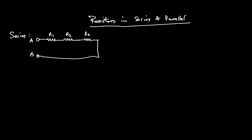When resistors are in series, it's very simple. All you do to find the total resistance — in this case the resistance between A and B — is just add the sum of all three. No more complicated than that.